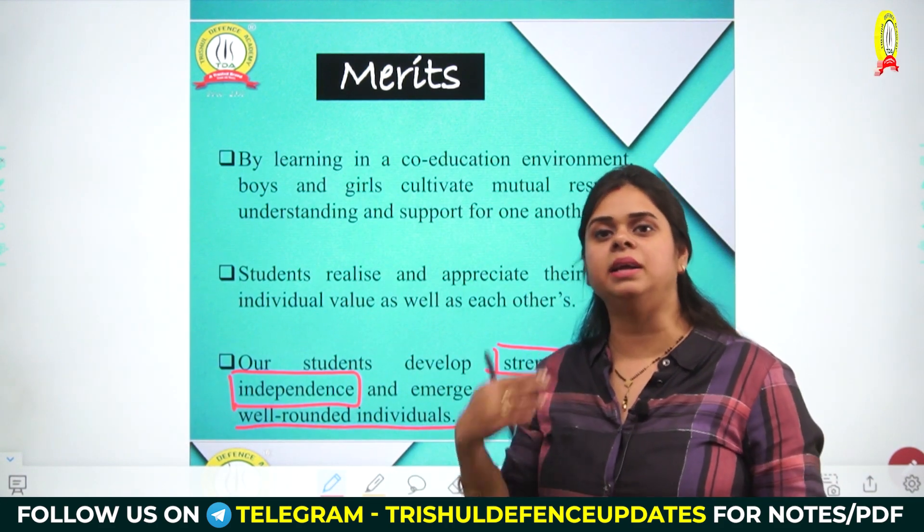Please remember, as I always say, with every merit you have to attach a practical example. For example, I've been studying in a co-educated school and I can feel that I don't hesitate while speaking to girls or boys because this training was given right from the beginning in our schools. This way you attach relevant examples to your merits to make your GD stronger.